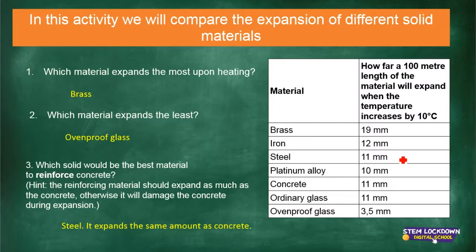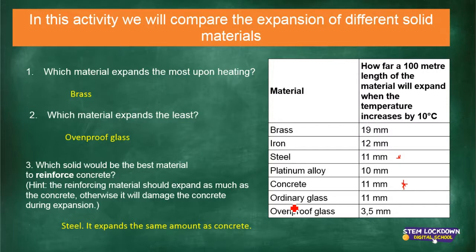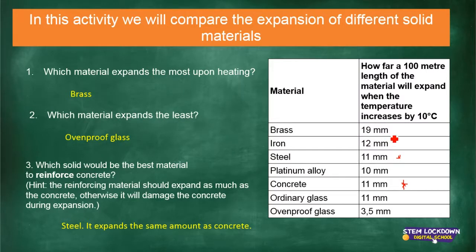Looking at the table: steel is 11 mm, concrete is 11 mm, and ordinary glass is also 11 mm — but we wouldn't want to use glass mixed with other materials because it will crack. The material that expands the most upon heating is brass at 19 mm. The material that expands the least is ovenproof glass at 3.5 mm.